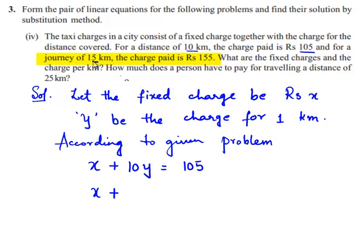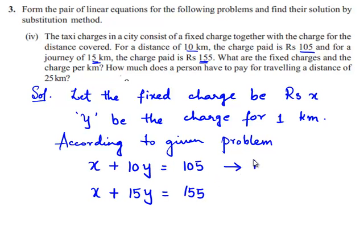In the second case, the journey is 15 kilometers, so we can write 15y. This is equal to the charge paid, which was rupees 155. So this gives us 155. This is equation number 1 and this is equation number 2.